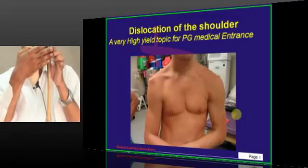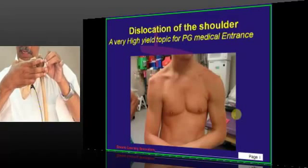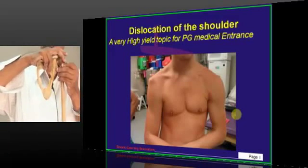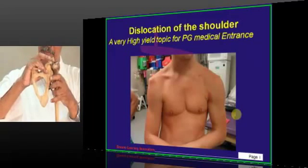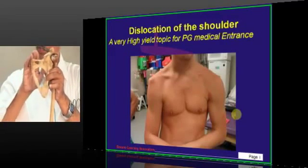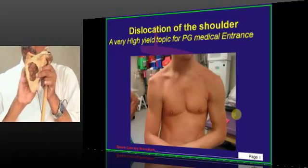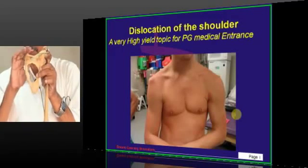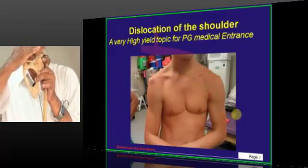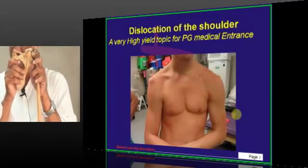Anteriorly, it is the subscapularis muscle. Superiorly, it is the supraspinatus muscle. Posteriorly, it is the infraspinatus muscle and teres minor. So anteriorly, posteriorly, and superiorly the muscles are present.